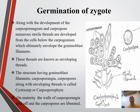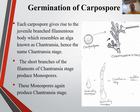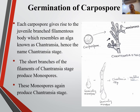You can observe in the picture. The haploid carposporophyte, parasitic on the female gametophyte, produces haploid non-motile carpospores. They are liberated into the water where they germinate to give rise to a juvenile branch filamentous body which resembles another alga known as Cantransia — hence the name Cantransia stage. The short branches of the filaments of the Cantransia stage produce monospores. The monospores again produce the Cantransia stage, or after germination give rise to the vegetative gametophytic thallus.